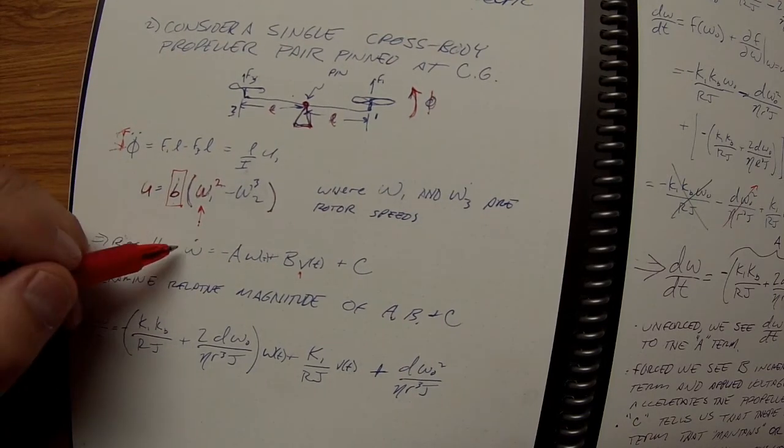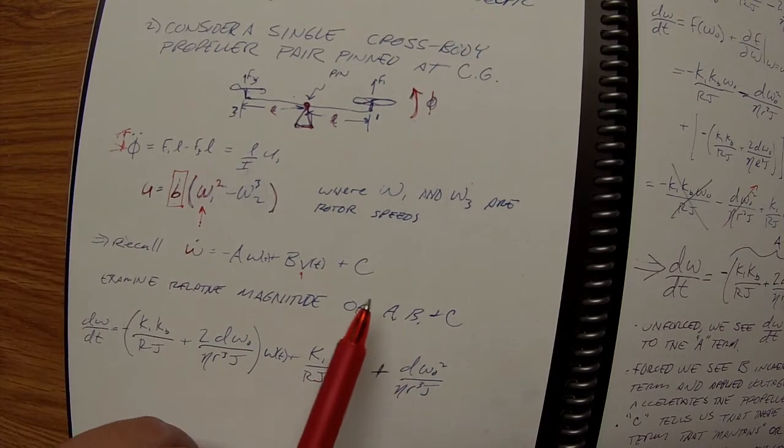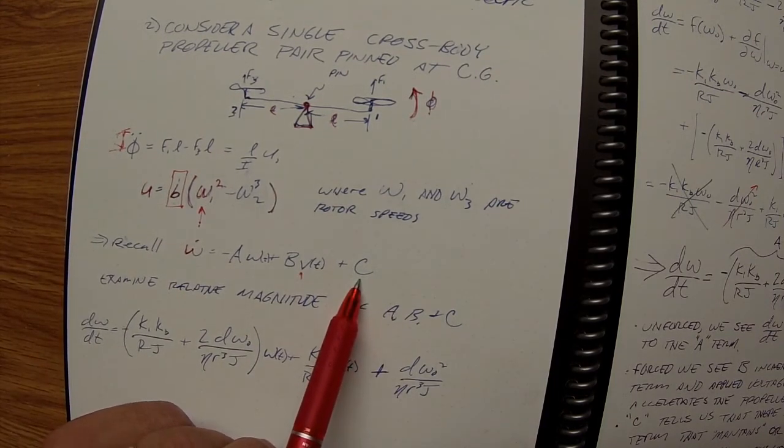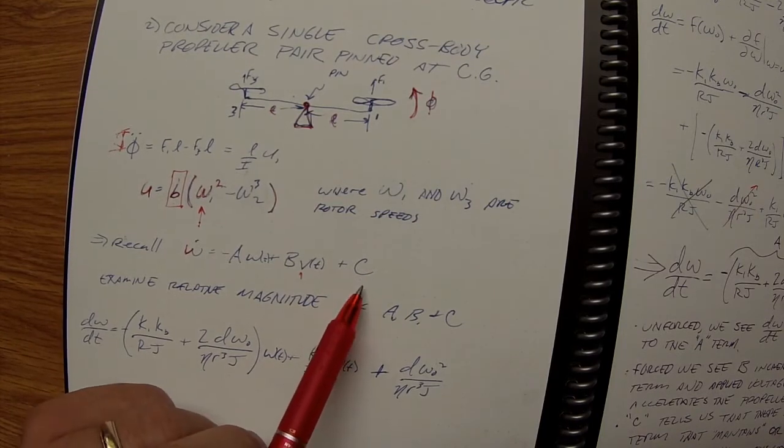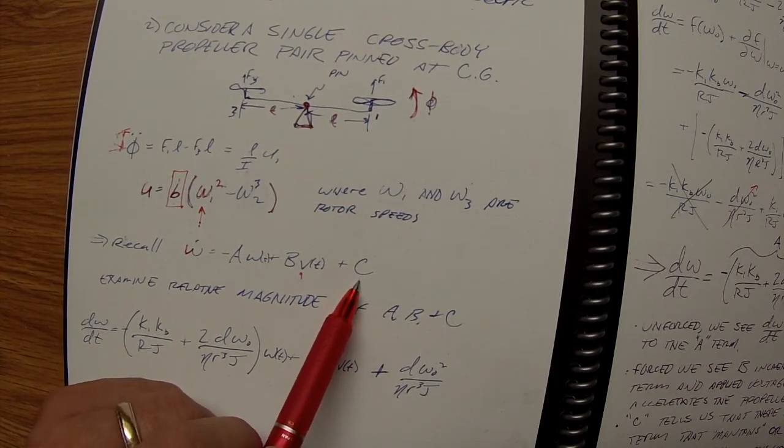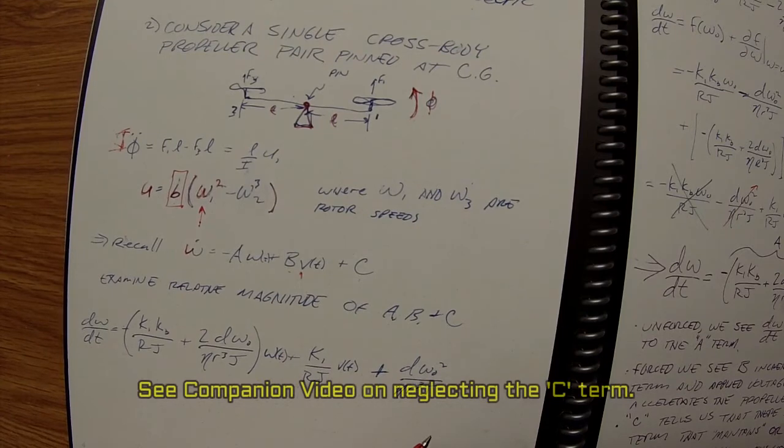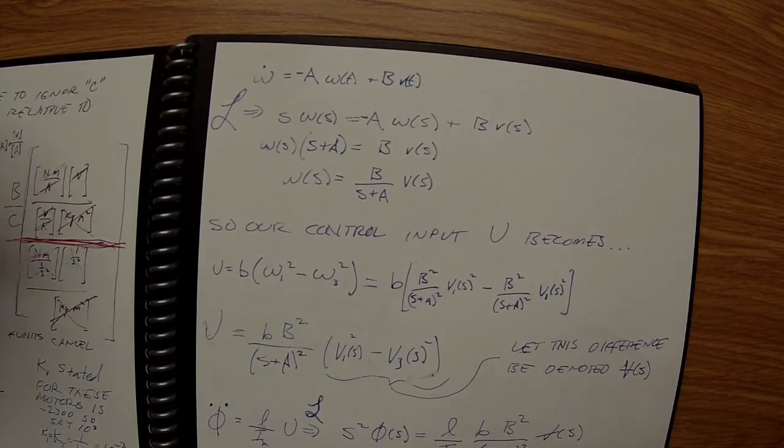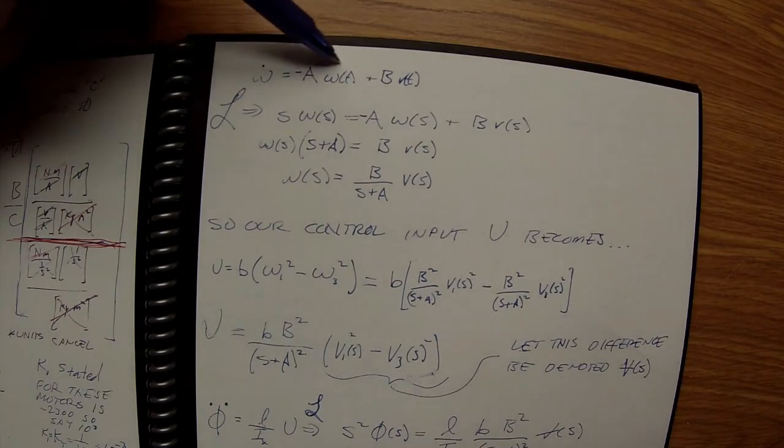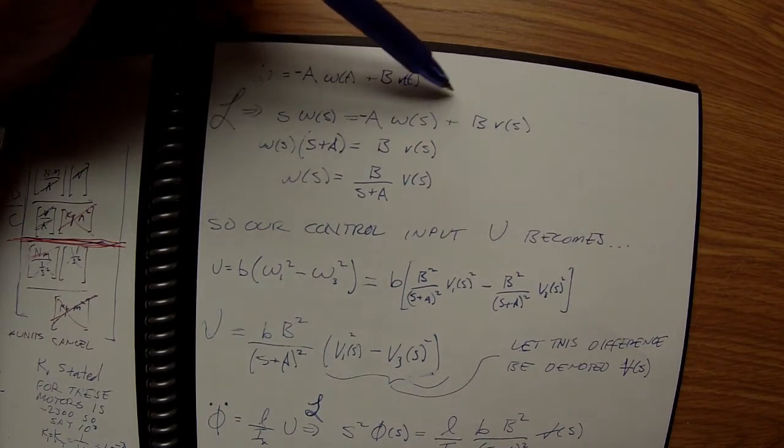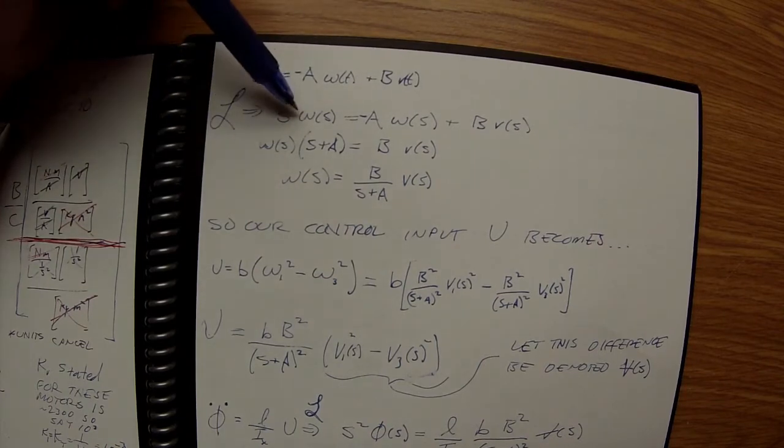We've got this constant C term in the differential equation, and that's troubling for a simplified model. In the Bouabdallah paper, he tells us we're just going to neglect it because it's significantly smaller than B. Rather than take his word for it, we're going to see if that's the case. Now we've simplified: dω/dt is that motor propeller speed equation minus the C term, so we get rid of it and take the Laplace transform.